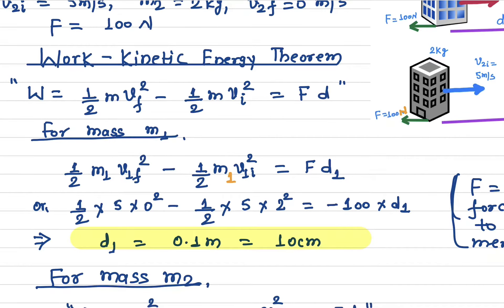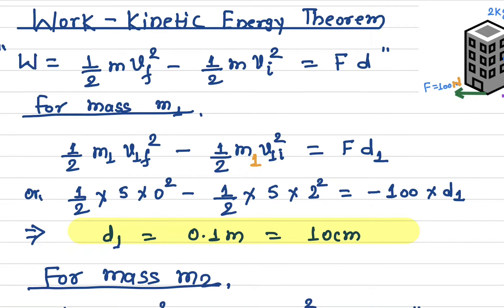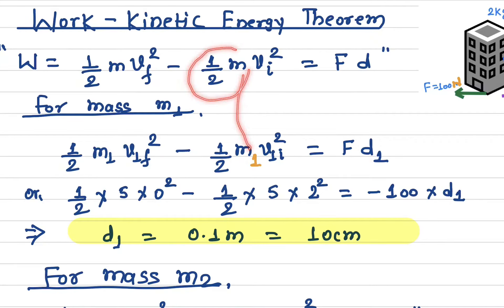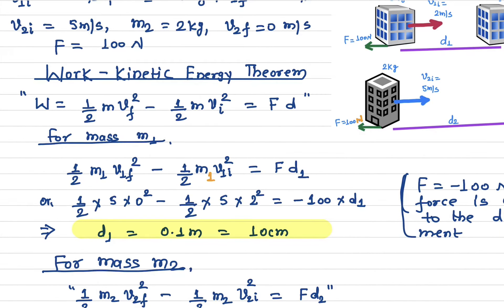Now let's apply this for the first object. For mass m1, we have one-half m1 times v1f squared minus one-half m1 times v1i squared, where v1f is the final speed and v1i is the initial speed of the first object. The force times the distance traveled is d1. We will now plug in all the values.